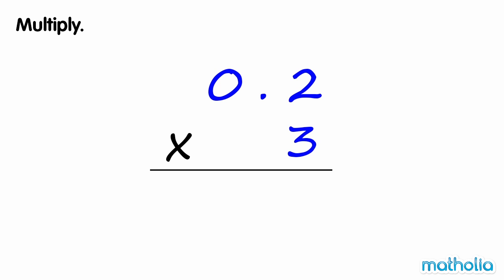Multiply. Find 0.2 times 3. Start by multiplying the tenths. 3 times 2 tenths equals 6 tenths. Remember to write the decimal point.